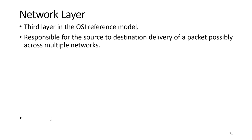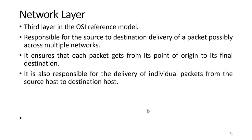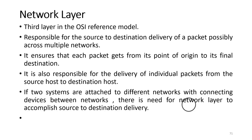We will see this source-to-destination delivery in the upcoming slides. The network layer ensures that each packet gets from its point of origin to its final destination — meaning the packet sent from the source should be received at the receiver end. If two systems are attached to different networks with connecting devices between them, there is a need for the network layer to accomplish source-to-destination delivery.